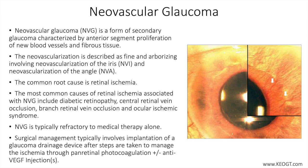Diagnosis of NVG is based on clinical examination and can be assisted by fluorescein angiography. The first sign of new vessel growth in the anterior segment is leakage of intravenously injected fluorescein dye from vessels at the pupillary margin. This is the pre-rubeosis stage, as NVI and NVA are not yet detectable.